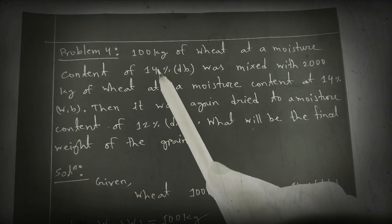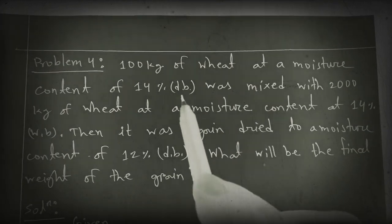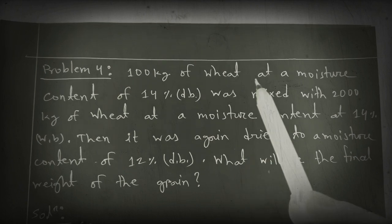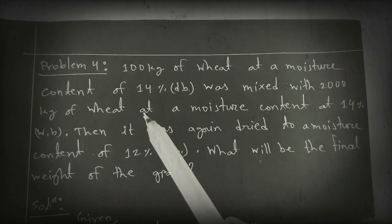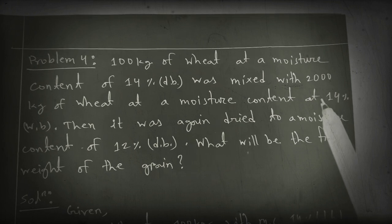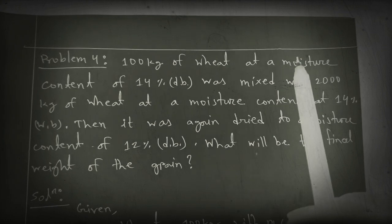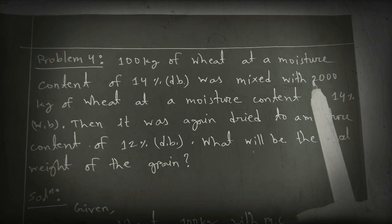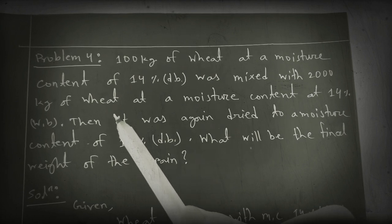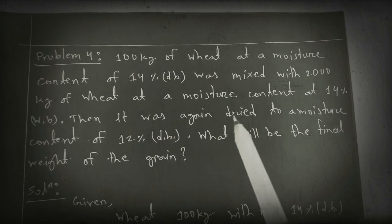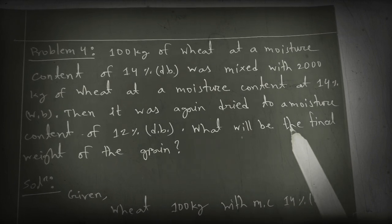Hello friends, in today's video we are going to solve two maths. Here is our first problem: 100 kg of wheat at a moisture content of 14% dry basis was mixed with 2000 kg of wheat at a moisture content of 14% weight basis. Then it was dried to a moisture content of 12% dry basis. What will be the final weight of the grain?